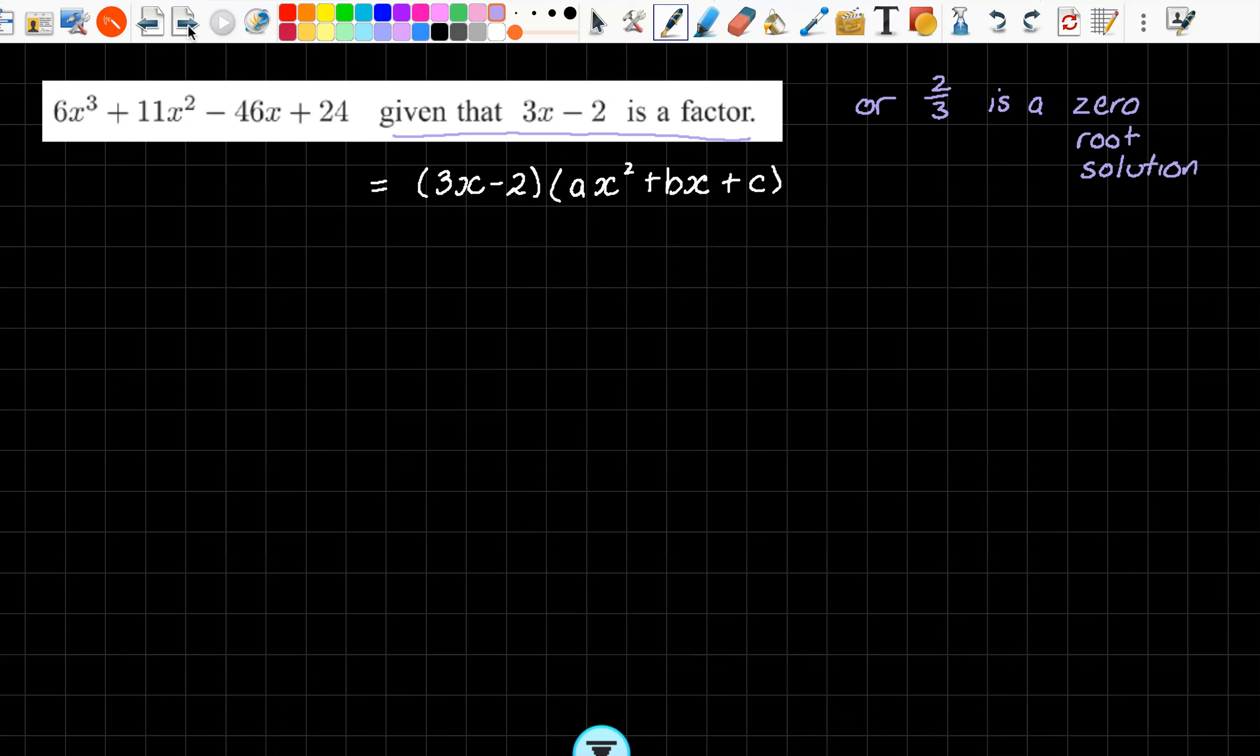So here we go. Let's find our a value. Clearly, when I times these together, 3x times ax squared, 3 times a has to give me 6, so therefore a must be 2. Then we've got minus 2 times c, and that has to give me minus 24. So 2 twelves are 24. I've got a negative times this, and I want it to be a positive, so that has to be a minus.